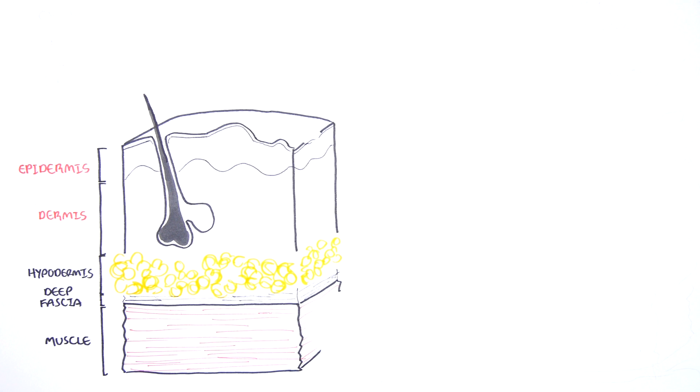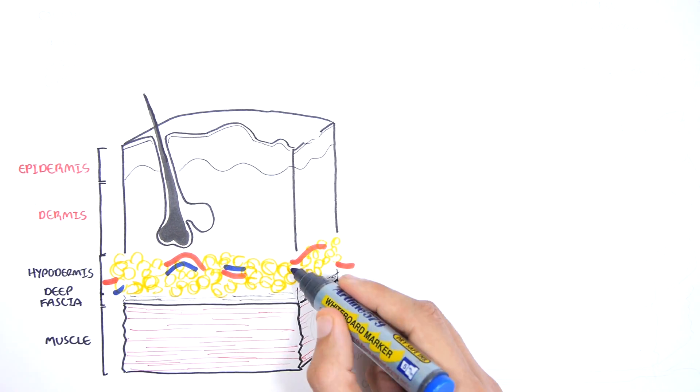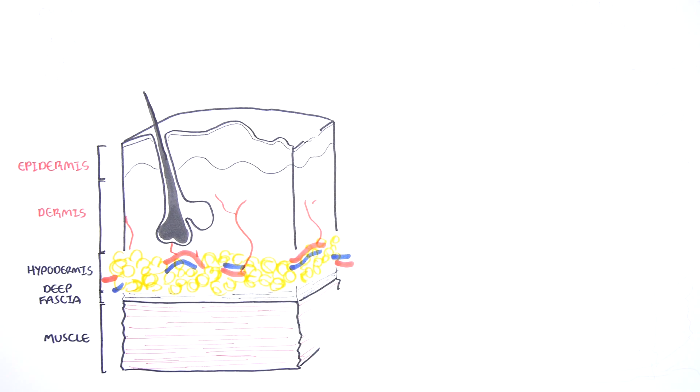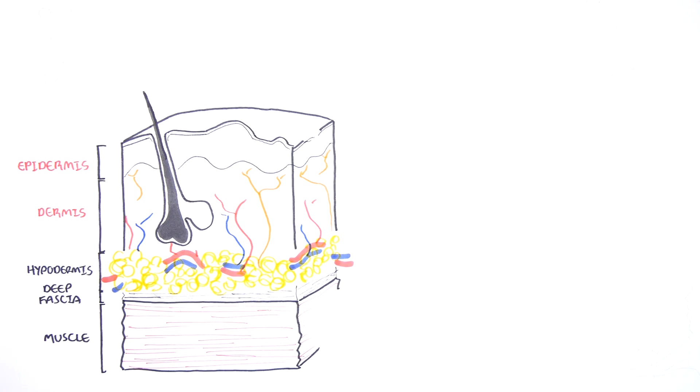In the hypodermis dermis area, you find the skin artery and veins, which project capillaries all the way up to the base of the epidermis. You also find sensory nerve fibers which go all the way up to the base of the epidermis as well.